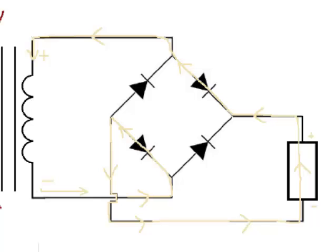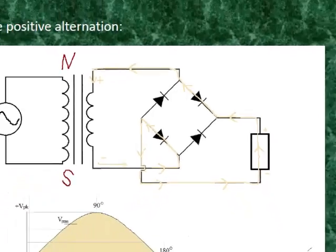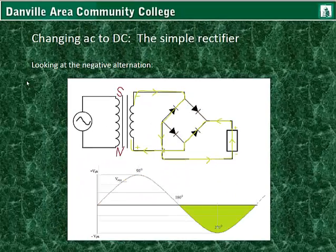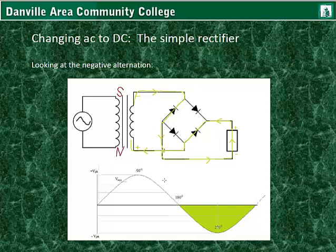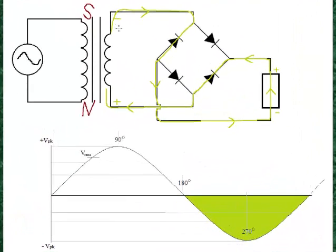Now we'll look at what happens with the negative alternation. The magnetic field has changed in the transformer — the source is now a negative alternation, so the polarity has switched. This is now the source and this is where they want to go. The electrons flow this way — they can't go that way because it's a road block — they go through this diode.